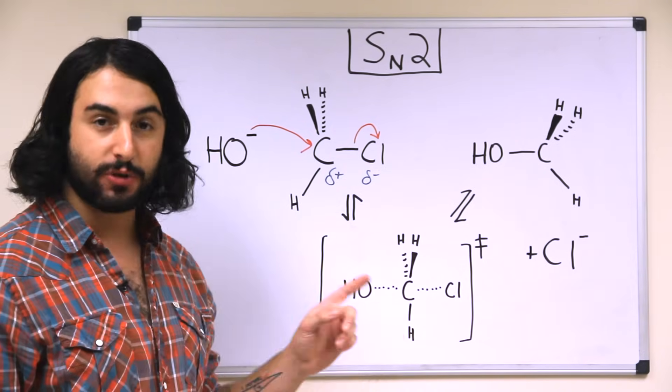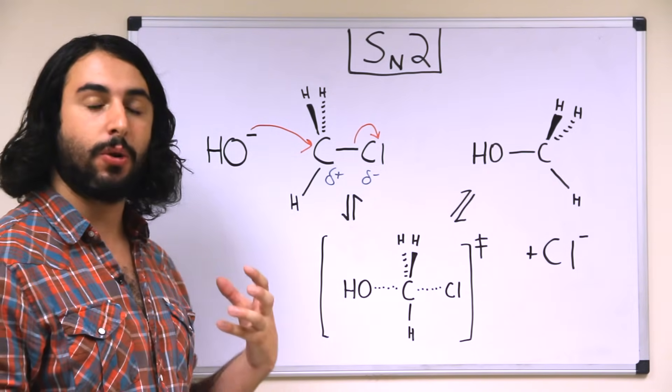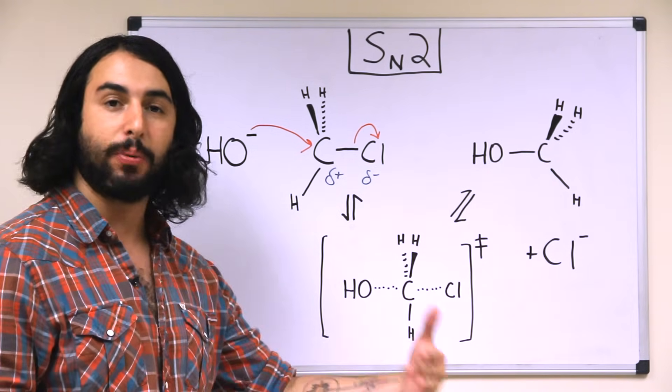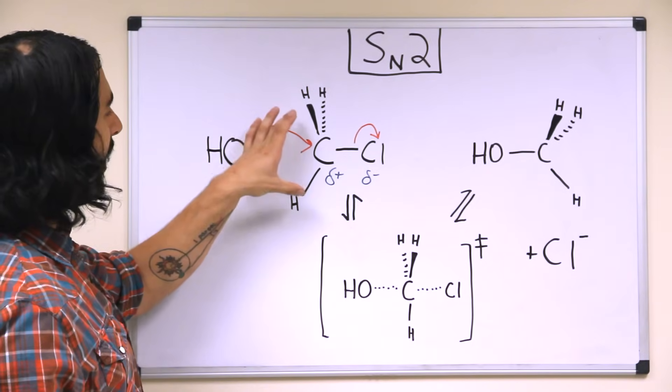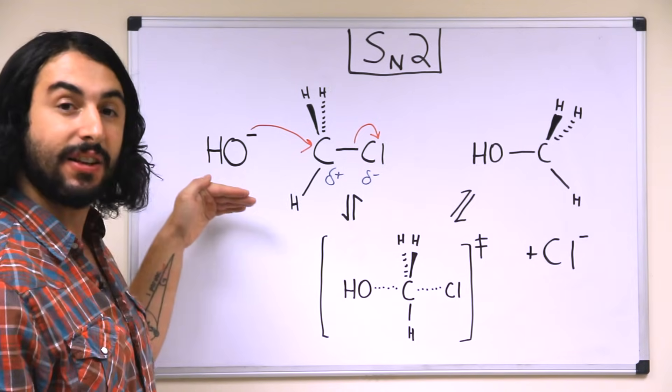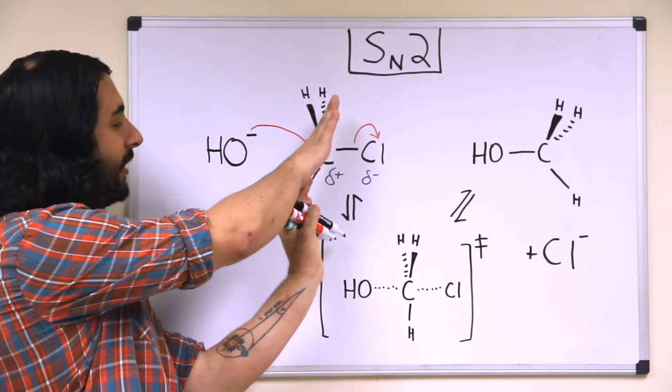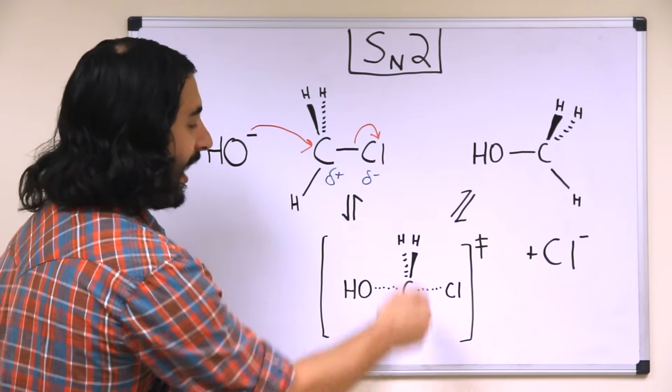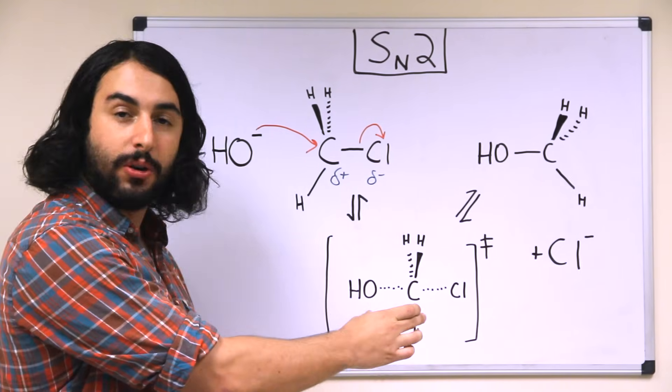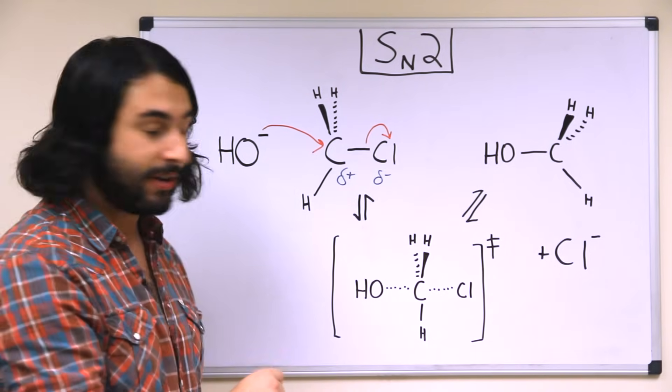Now the interesting thing happening in terms of geometry is that in SN2, the substrate is going to sort of invert like an umbrella. So we can see here that we have one orientation. But then as this electron density from the nucleophile approaches, this is going to start to invert like that until we have this trigonal bipyramidal like transition state here because of the five electron domains.